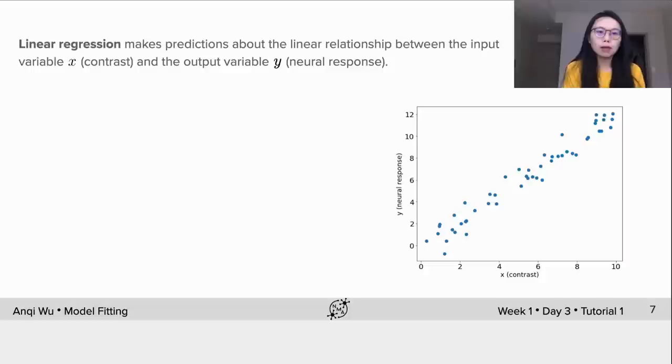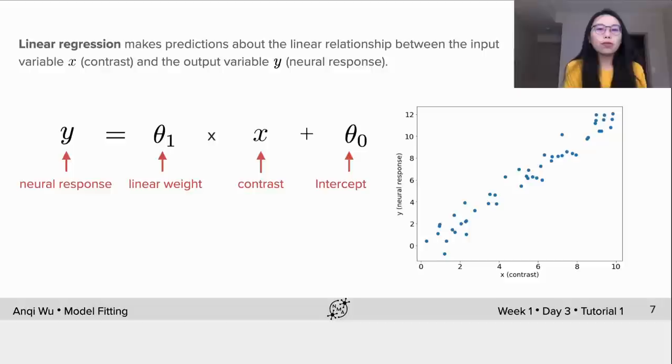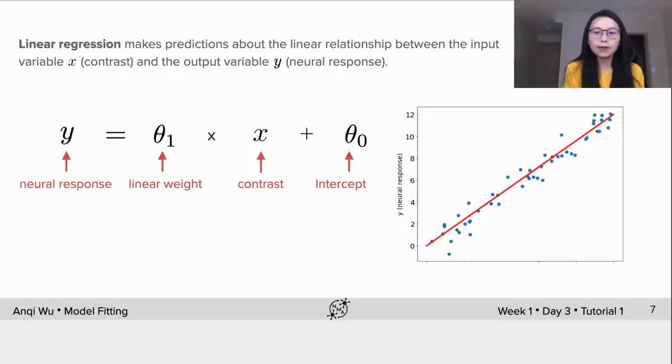this: Y is equal to theta_1 multiplied by X plus theta_0, where Y is the scalar neural response, X is the input contrast, and they're both observations. We can plot this linear function as the red line here, and theta_1 is the linear weight or the slope of the line, and theta_0 is the intercept.